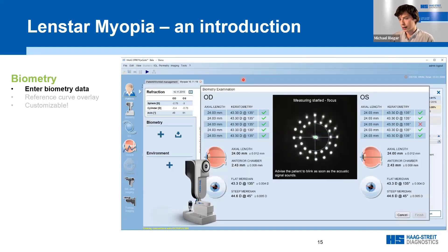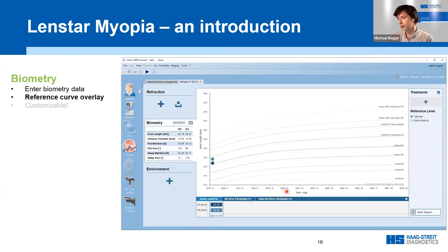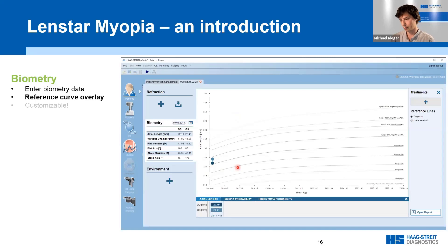The biometry section displays measurements from our LENSTAR, providing information like axial length and keratometry readings. Once imported into the software, you get a graph showing axial length on the y-axis and patient age on the x-axis, just like in the refraction section. These data are overlaid with percentile curves from Tideman et al. For example, a patient aged six to seven with an axial length of 22 millimeters has a 33% likelihood of becoming myopic in adulthood.